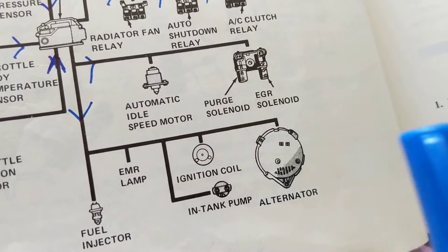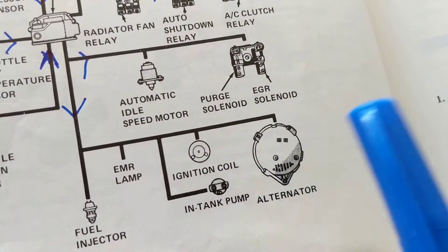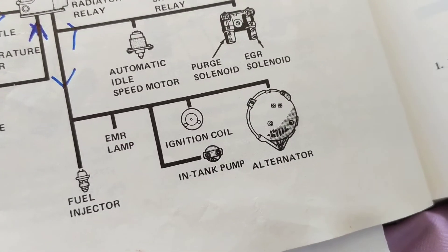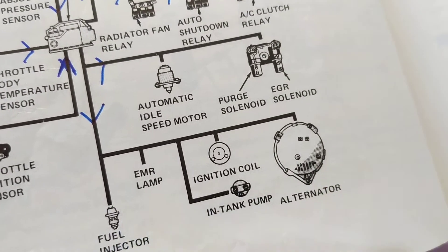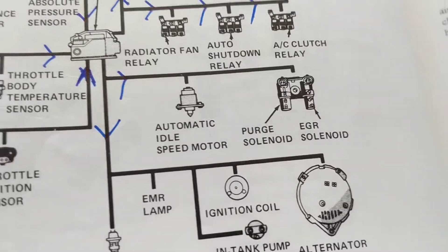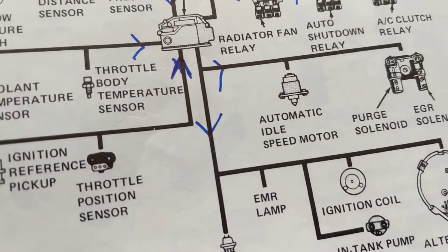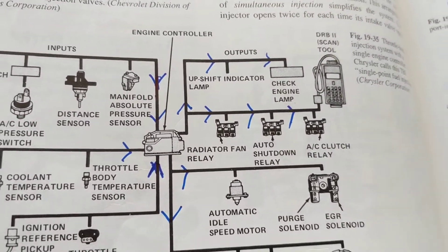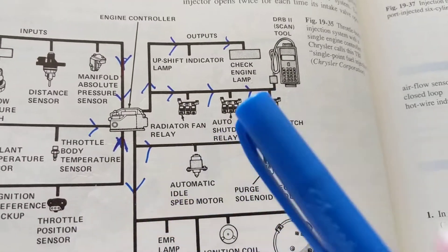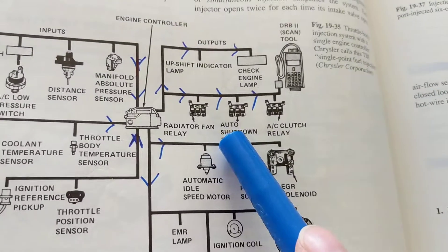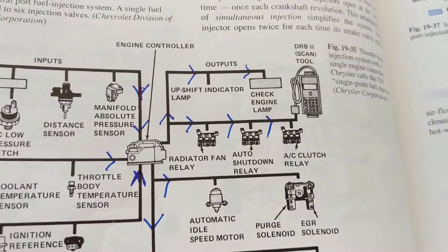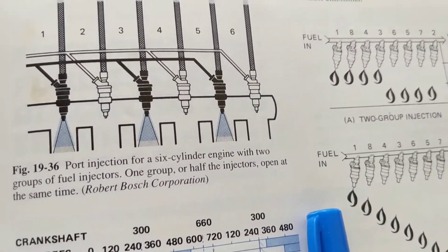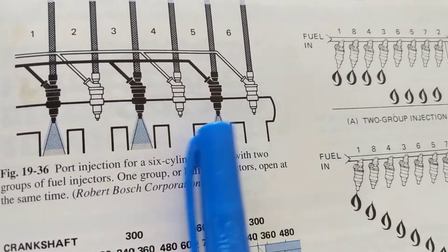The alternator is always computer controlled now — there's no manual regulation anymore; everything is by the computer. Moving on to the next point: there are different fuel injection systems. For example, if you have six or eight cylinders, when do the fuel injectors open and close? It depends on the system.